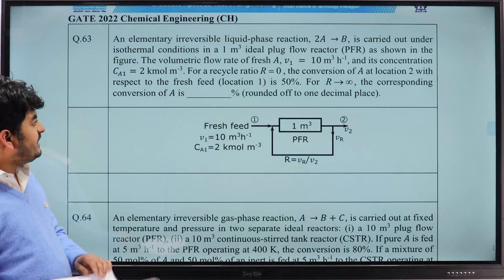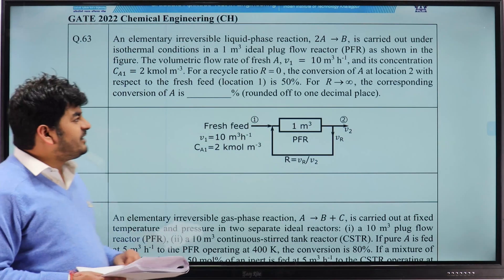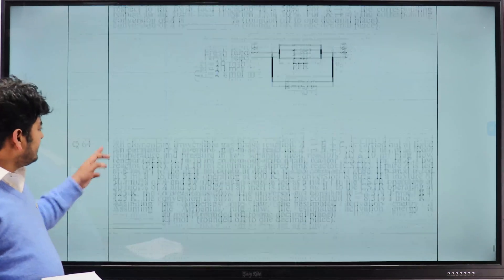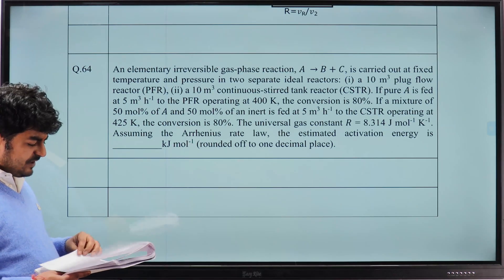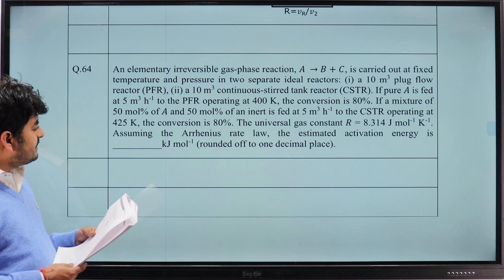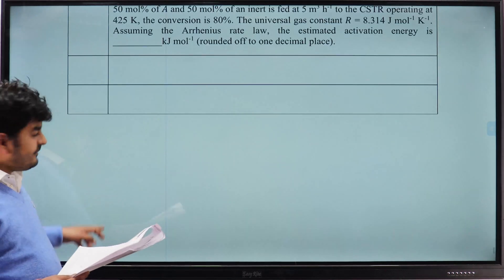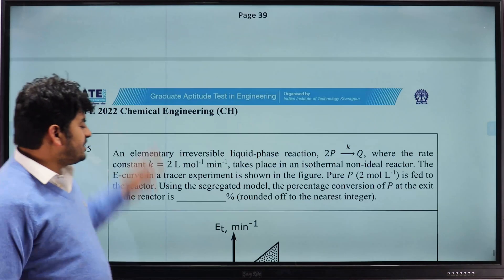For question number 63, the answer is 38.2 percent. For question number 64, the answer is about 47.5 kilojoule per mole. And for question number 65, segregation model.